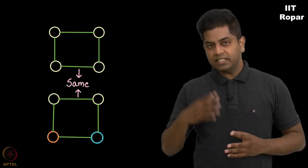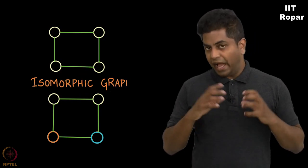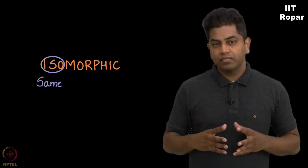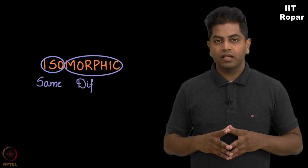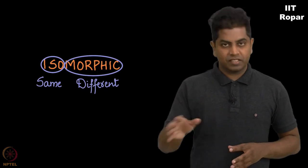So such graphs are called isomorphic graphs. By iso we mean same, by morphic we mean same yet different. Iso means same, morphic means different.